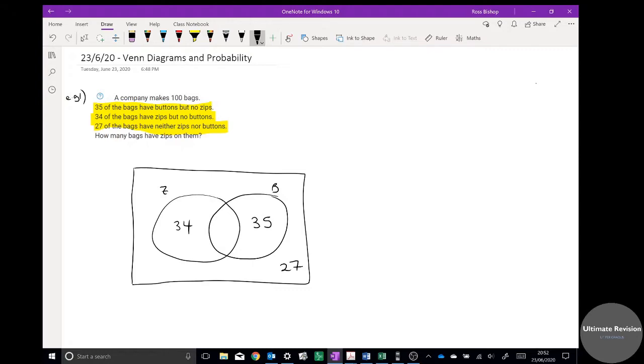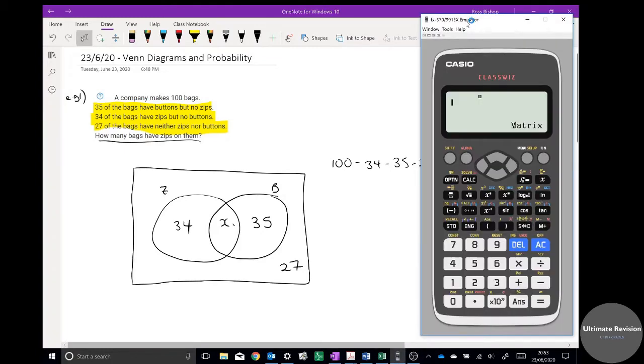How many bags have zips on them? Well, the common mistake here is people might just put 34, but we've also potentially got some that are combined in both. So if I put that as x, I know that they all must add up to 100, so I know that 100 minus 34 minus 35 minus 27 must equal that area in the middle there, the x value.